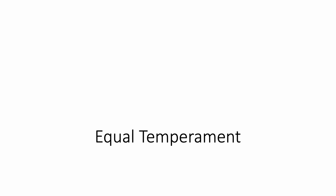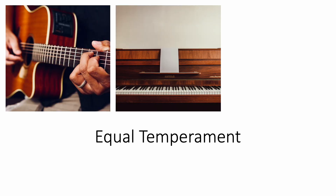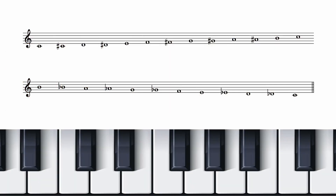The most common tuning system in use today across the world is probably equal temperament. This is the tuning that we find on modern pianos and guitars and the default on digital instruments like keyboards and synthesizers. In equal temperament, all of the half steps are exactly the same distance apart, enabling us to create music that sounds the same in any major and minor key from any pitch on the piano.